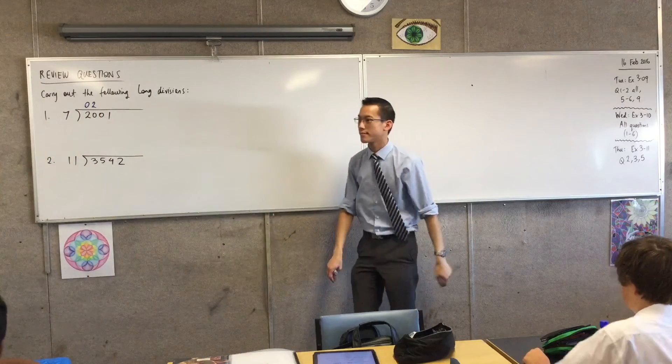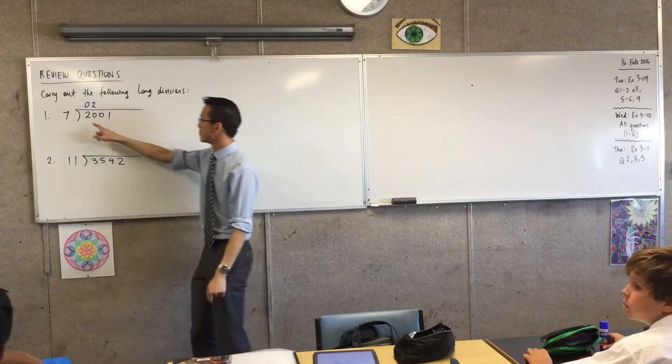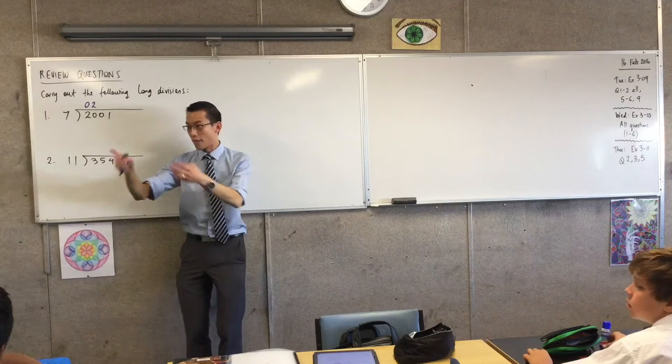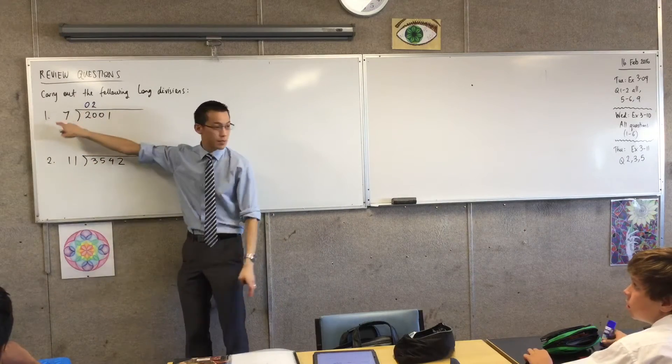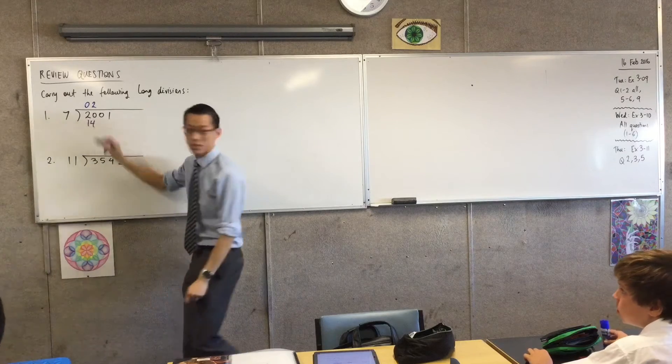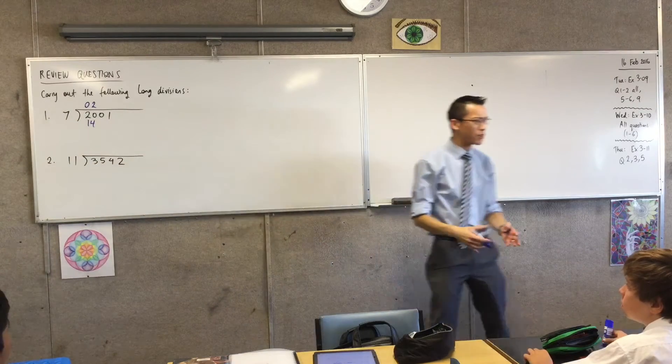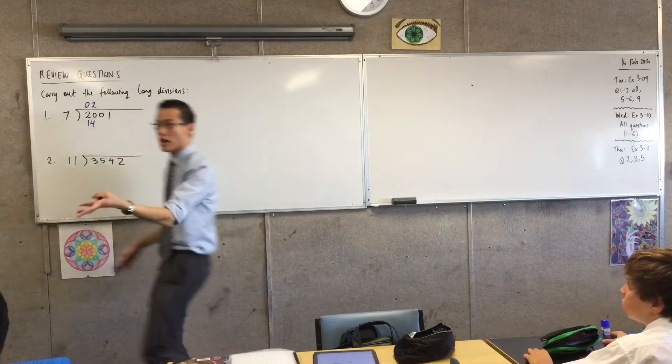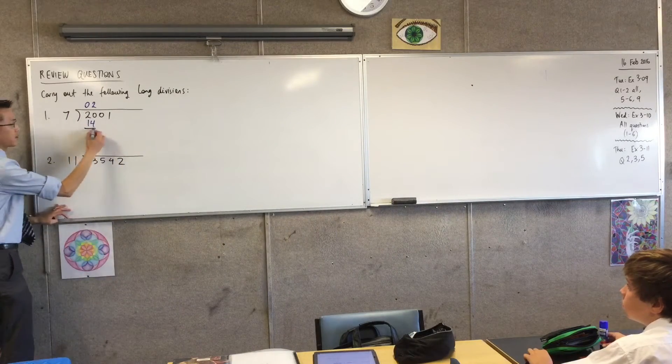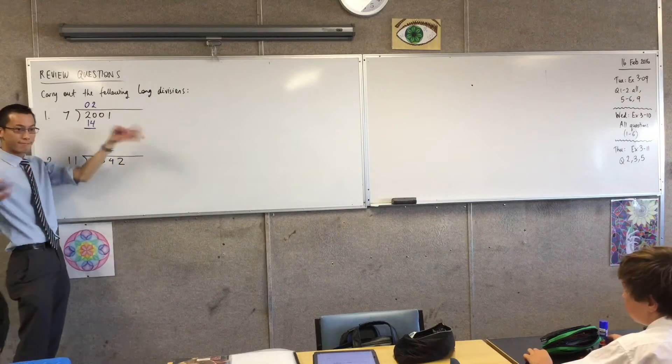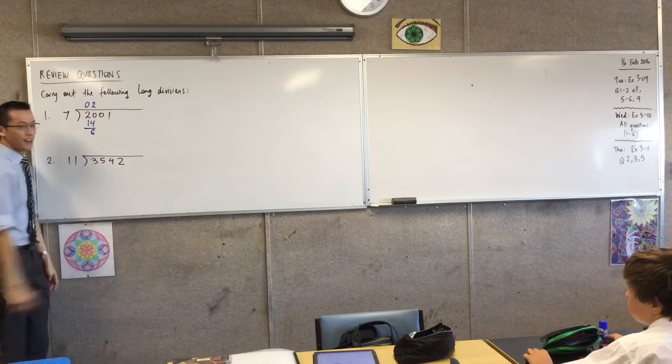Can I do 20 minus 14? Okay. So I've got 20 take away 2 times 7. That's where the 14 comes from, right? So I'm going to write that 14 down there. Do you remember this from going through long division? And I do the subtraction that Aiden was suggesting. So 20 take away 14, of course, is 6. Fantastic.